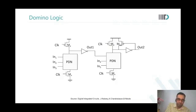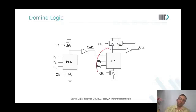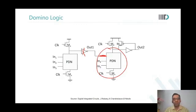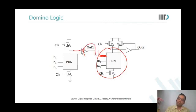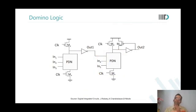A student asks how the inverter removes the cascading problem. The instructor explains: if the inverter was not there, what would be the default state of the input to the second PDN during pre-charge? When clock is zero, the output of the first stage is one. If it is one, then as soon as the clock comes, even before the first stage discharges, the second stage would also discharge — and we don't want that. The inverter changes the default state to zero, preventing premature discharge.